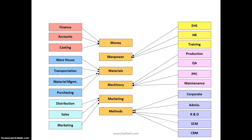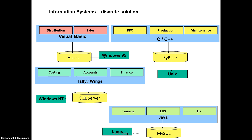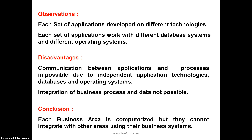If all departments are working on individual softwares — each with its own database and operating system — individual departments will work properly, but integration becomes a major problem. Whenever a department enters data, it is reserved only to that department and not shared with others, making communication between departments nearly impossible.